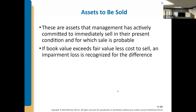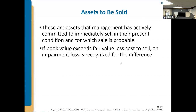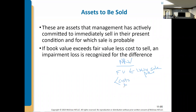If the book value is more than the fair value minus the cost of selling, you need to write them down to that fair value minus cost to sell, which is also referred to as net realizable value. Fair value is the likely selling price, and you subtract costs to sell — like realtor fees and transfer taxes — to get the net realizable value.